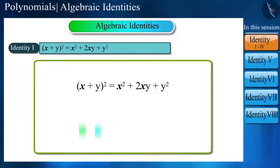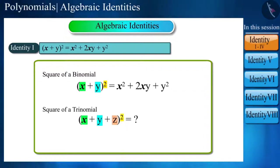Identity 1. Using the identity for the square of a binomial, we will derive the identity for the square of a trinomial. So, let's apply identity 1, x plus y square is equal to x square plus 2xy plus y square to a trinomial x plus y plus z to the whole square.